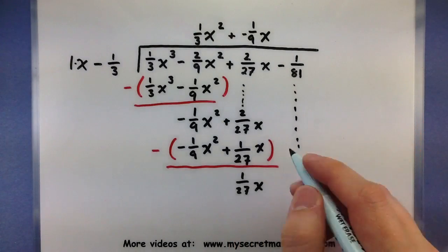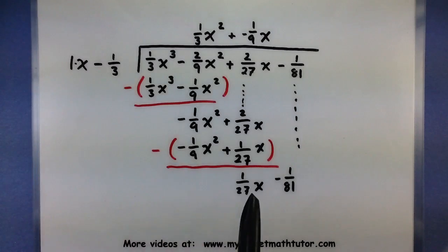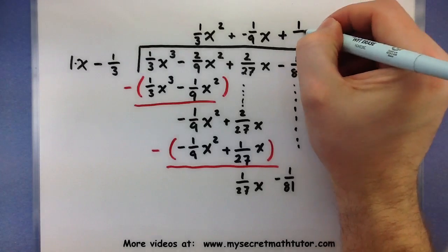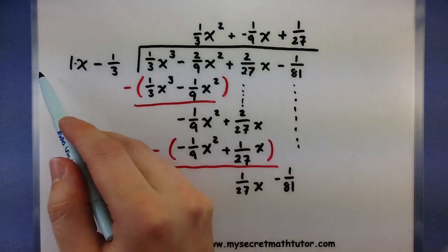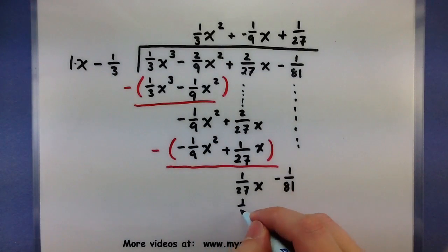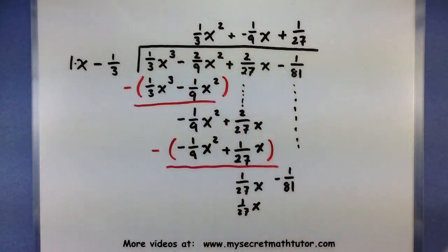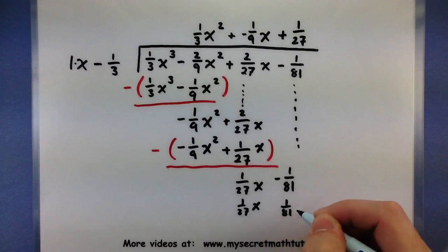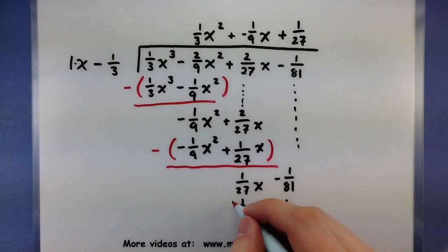Alright, let's bring down our last term and finish this problem. It looks like I need to multiply x by something in order to get 1/27 x, so I think just 1/27 will do it. Now we'll multiply through: 1/27 multiplied by x is 1/27 x. And 1/27 multiplied by negative 1/3 — 27 times 3 is 81, and positive times negative is negative — so negative 1/81. Looks awesome. Subtract them away.